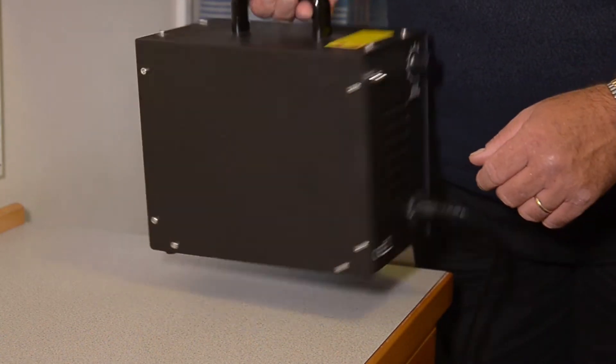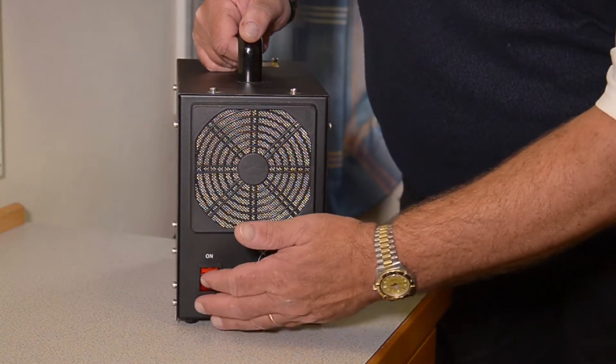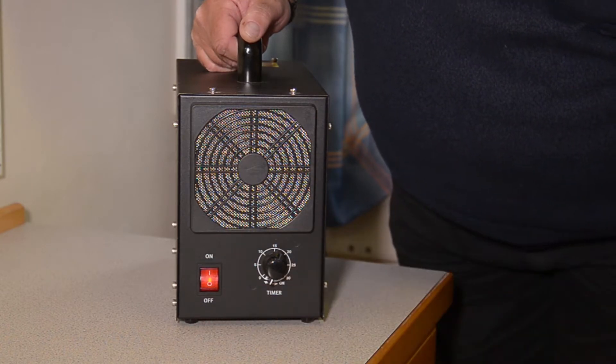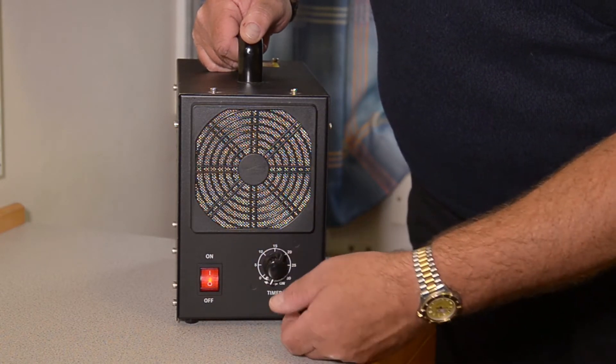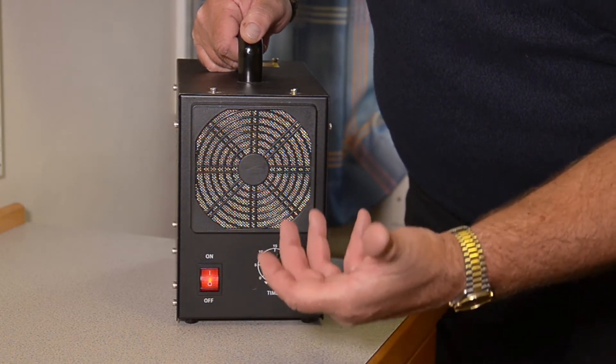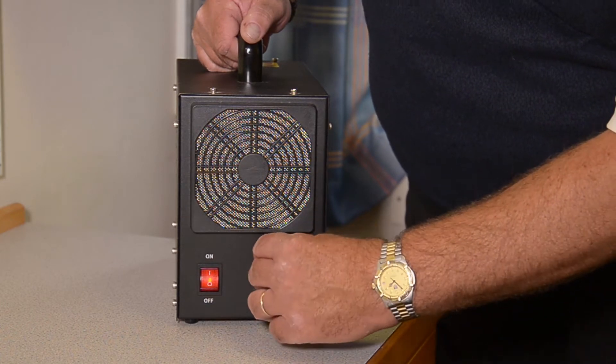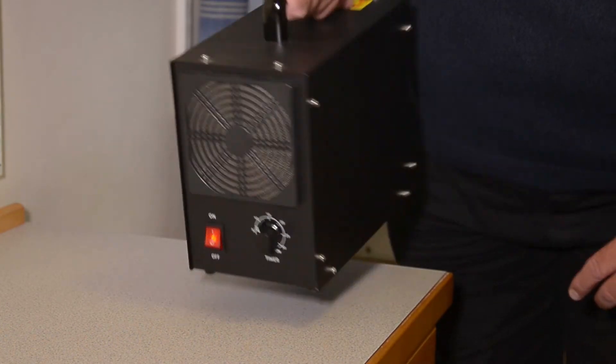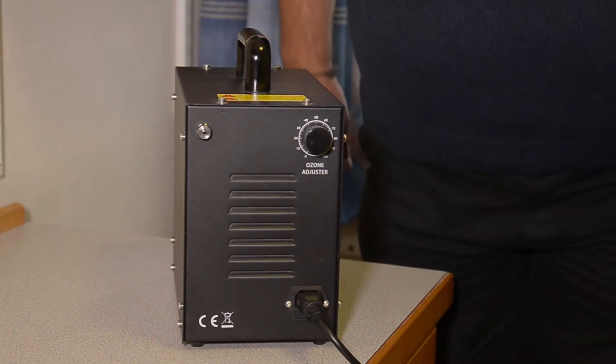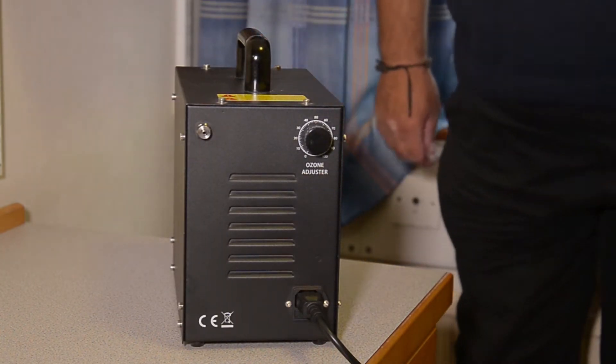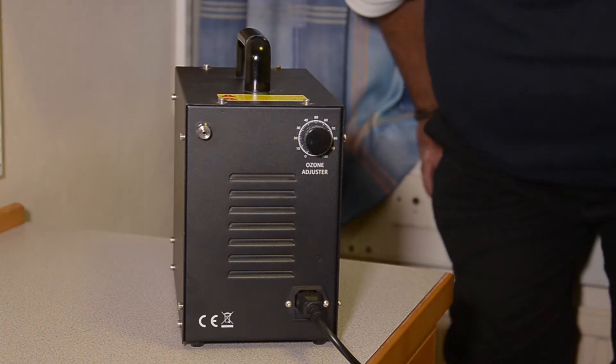The unit is controlled by an on-off switch at the back here, which is now on. And then to engage it for the time that you'd like it to run, which is a maximum of 30 minutes, which is now on, you can leave the machine, walk away and allow it to do its work for that 30 minute period.